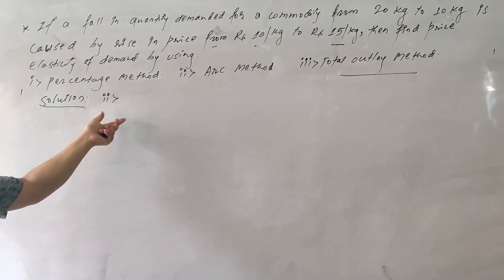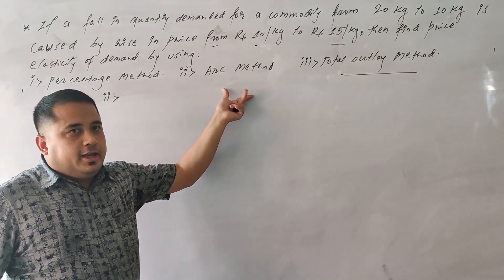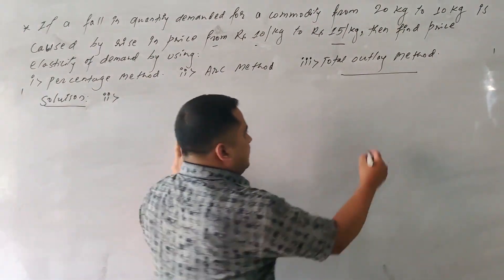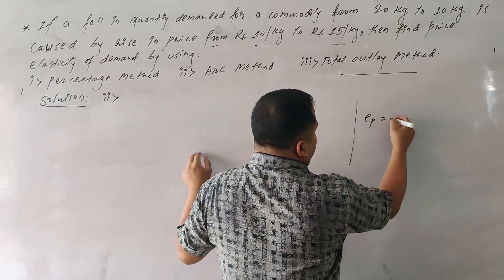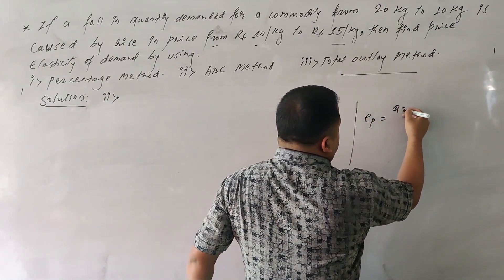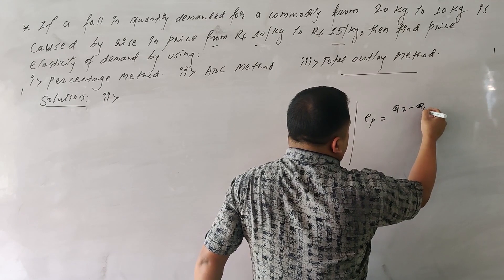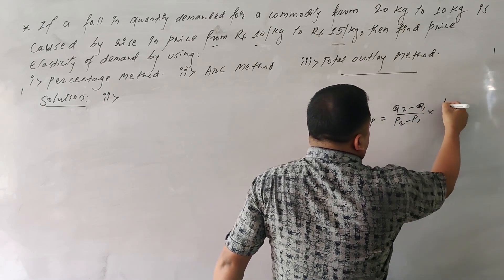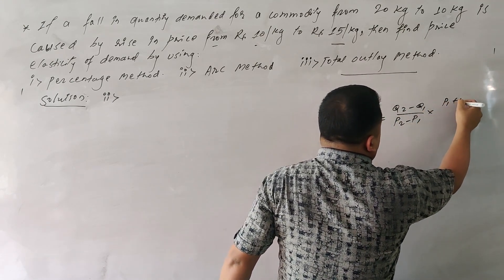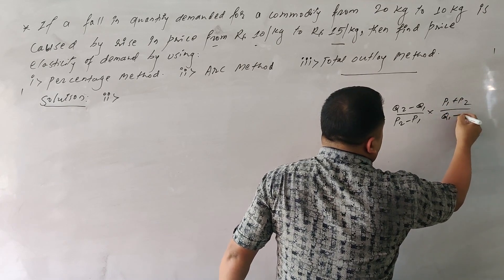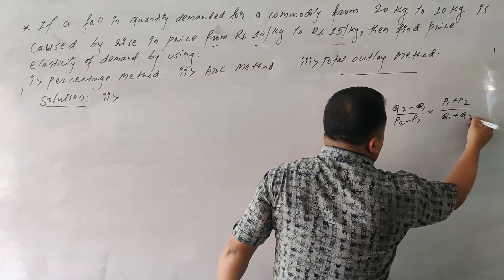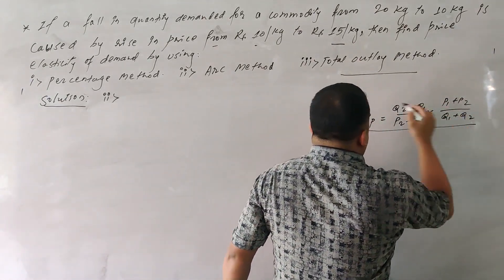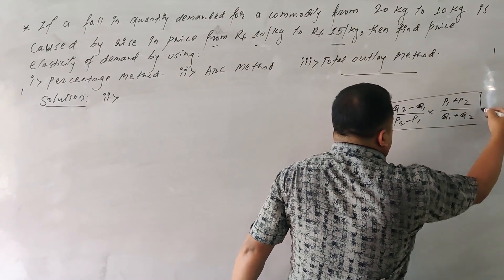The second method is the R method, also referred to as the arc elasticity method. The formula is: EP equals Q2 minus Q1, divided by P2 minus P1, multiplied by P1 plus P2, divided by Q1 plus Q2. This is the price elasticity formula.